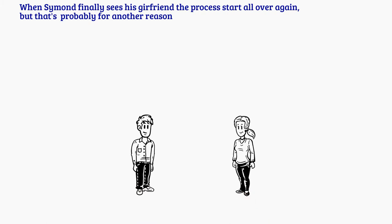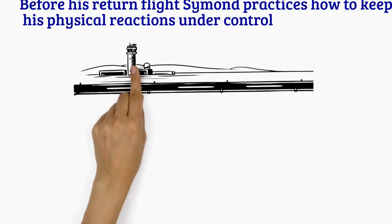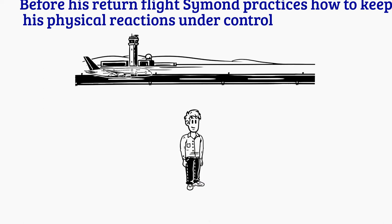When Simon finally sees his girlfriend, the process starts all over again, but that's probably for another reason. Before his return flight, Simon practices how to keep his physical reactions under control.